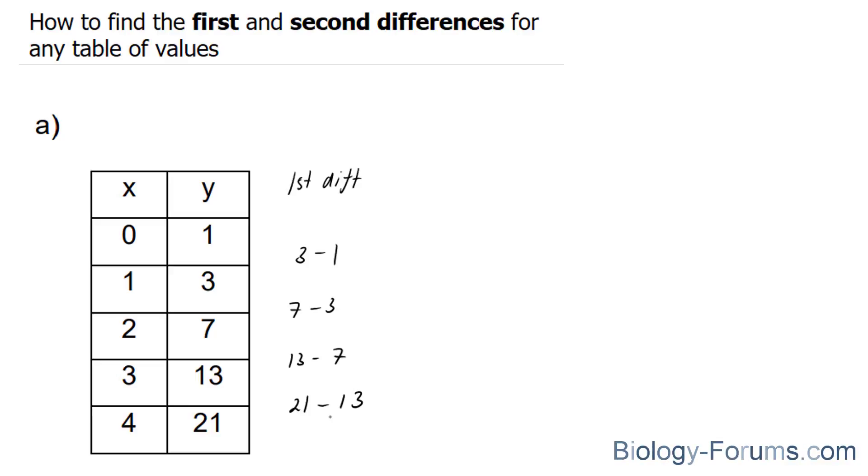The premise behind the first and second differences is that if the first differences are all the same, then you can conclude that the table of values represents a straight line. If they are not, then you move on to the second differences,